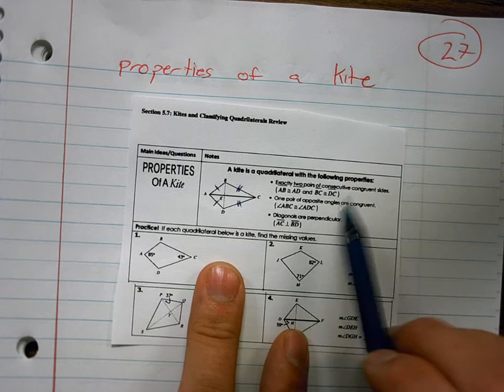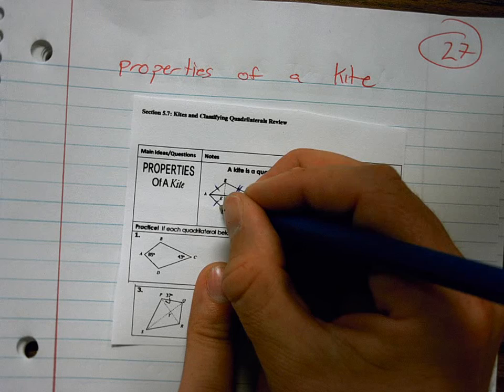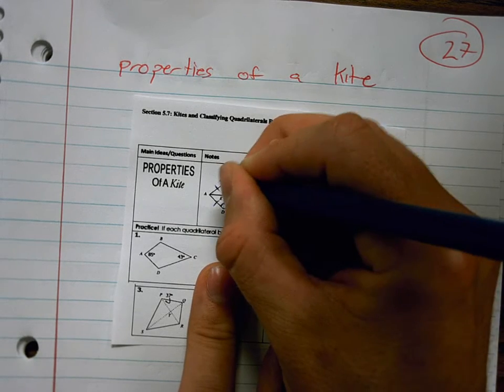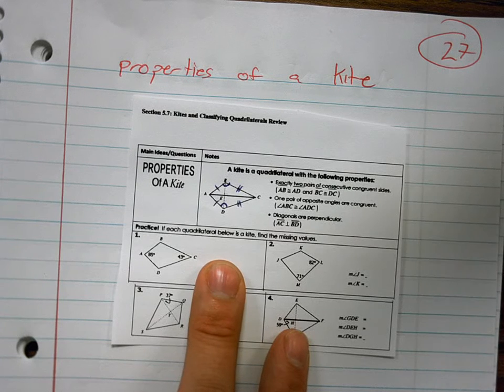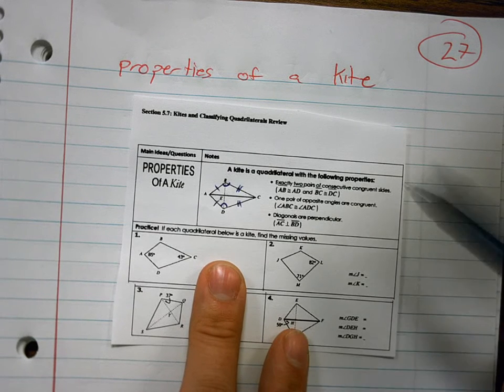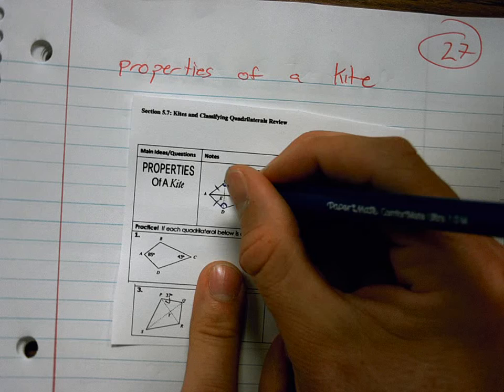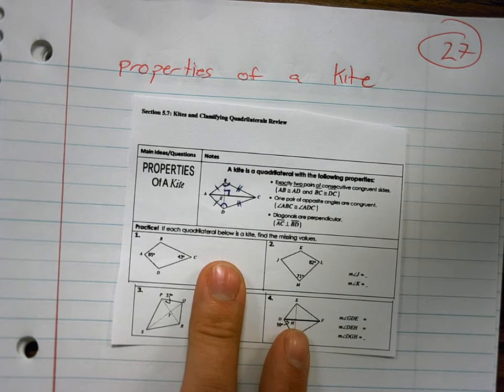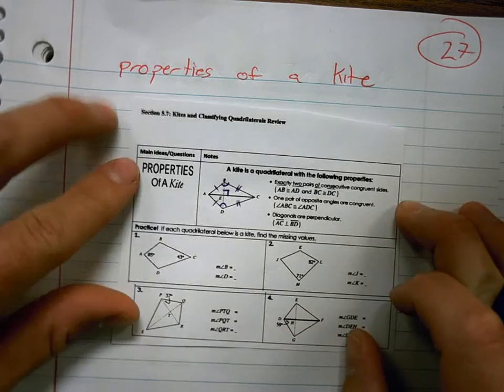One pair of opposite angles are congruent. So this angle is congruent to this angle. Diagonals are perpendicular. So I can put the 90 degree mark in. All right.